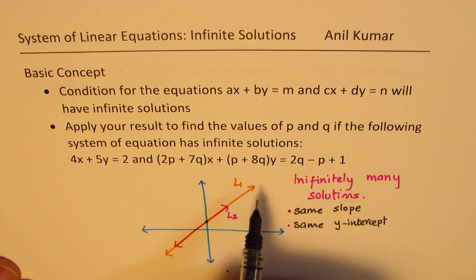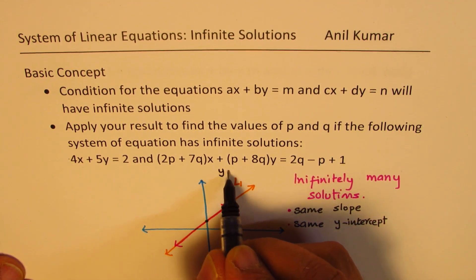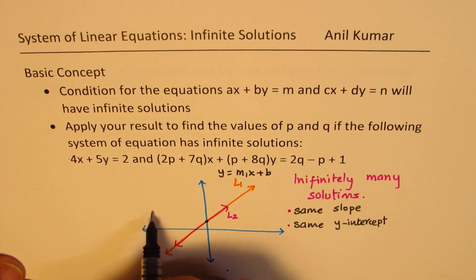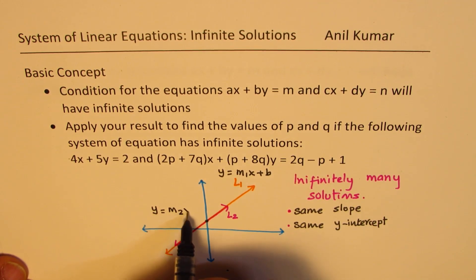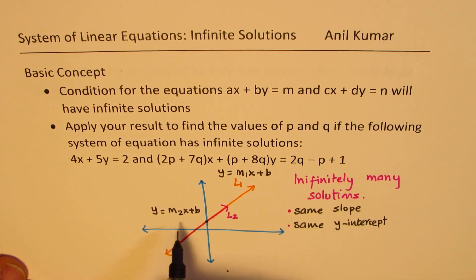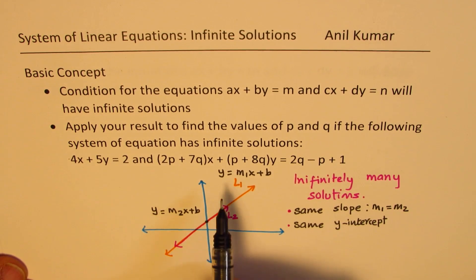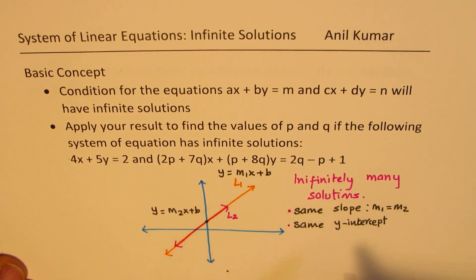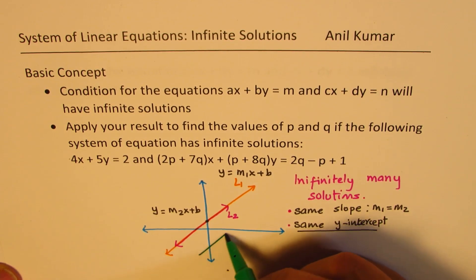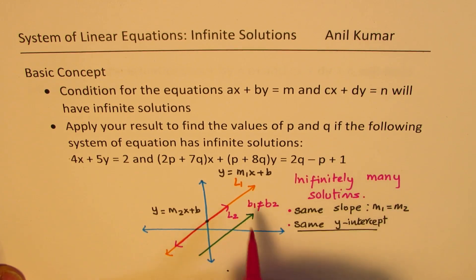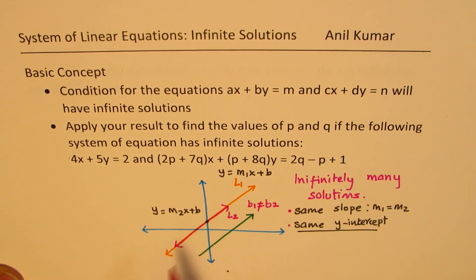As you can see here, if the equation of the first line is y = m1x + b, and the equation of the second line is y = m2x + b, then the slope m1 should be equal to m2 — that means they are parallel. But only one condition is not sufficient; the y-intercept has to be the same as well. Otherwise, we will have parallel lines, which means no solution. We have parallel lines if b1 is not equal to b2, but if they are the same, we have infinitely many solutions.